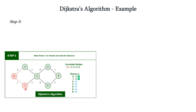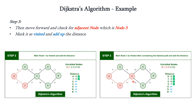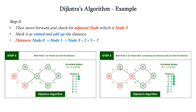Next, the current node is node 1. Its adjacent node is node 3, so we mark node 3 as visited and add up the distance. The distance from 0 to 1 is 2, and the distance from 1 to 3 is 5, giving a total of 7, which is updated for node 3. Node 2 is also considered — the path from 0 to 2 is 6, which is updated accordingly.